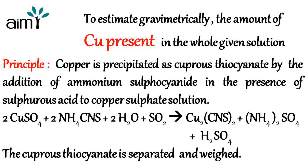To estimate gravimetrically the amount of copper present in the whole of the given solution, copper is precipitated as cuprous thiocyanate by the addition of ammonium sulfocyanate in the presence of sulfurous acid to copper sulfate solution. The reaction is as follows: 2 moles of copper sulfate plus 2 moles of NH4CNS (ammonium sulfocyanate) plus 2 moles of water plus sulfur dioxide gives Cu2(CNS)2 plus (NH4)2SO4 plus H2SO4.